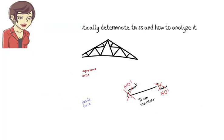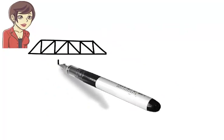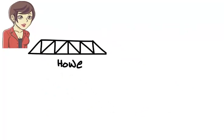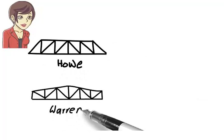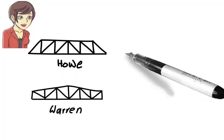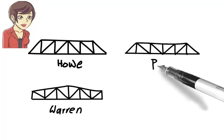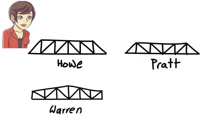Here are a few truss configurations usually seen in roofs and bridges: Howe truss, Warren truss, Pratt truss, and K truss.